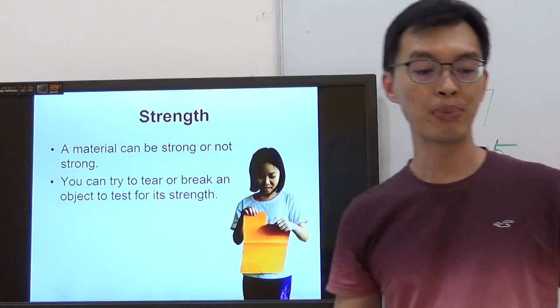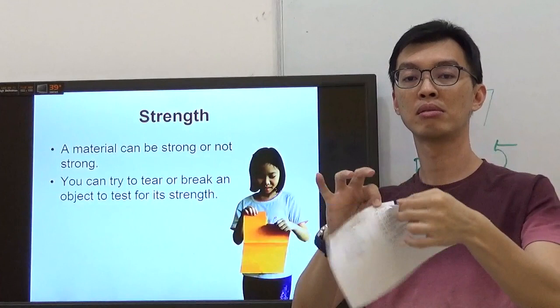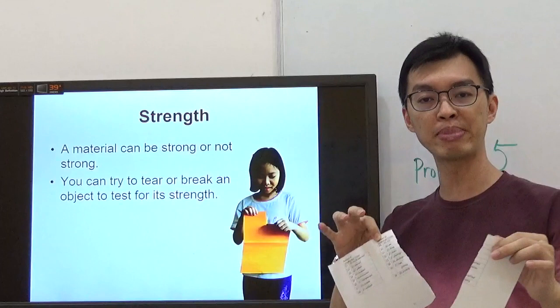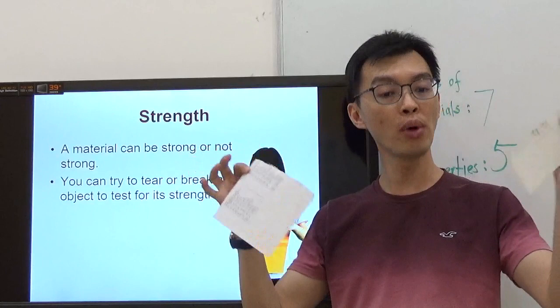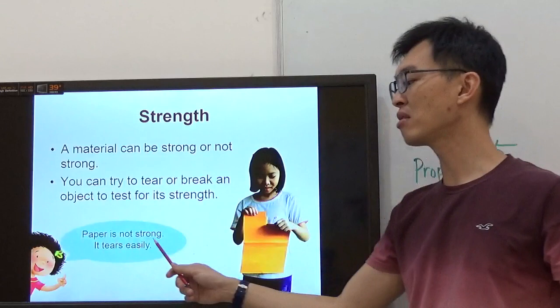Let me give you an example. I have a piece of paper here. Did I put a lot of strength to tearing this piece of paper? No. So what does this tell you about paper? It is actually pretty weak. Paper is not strong, it tears really easily.